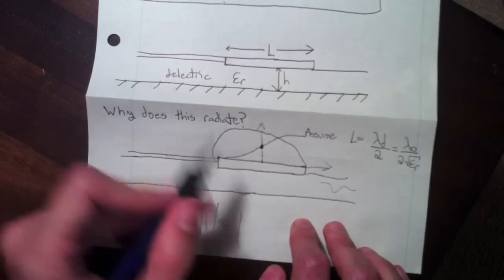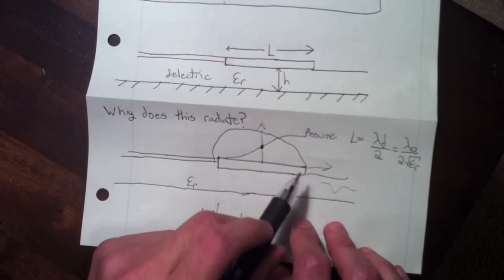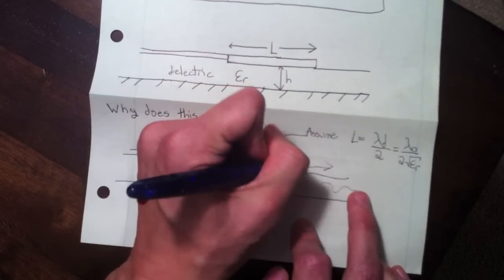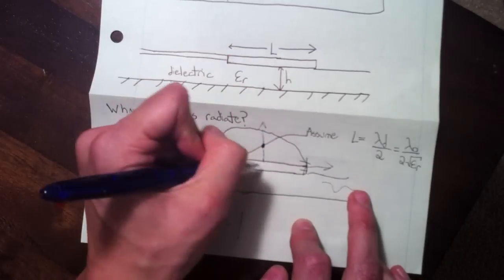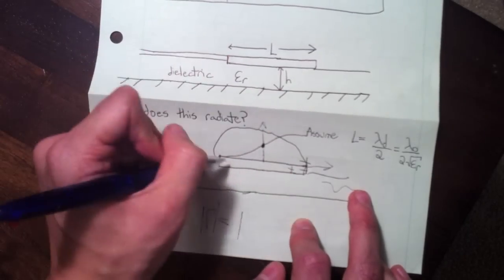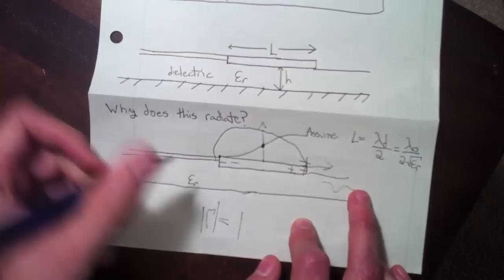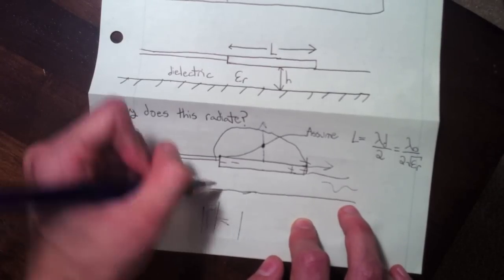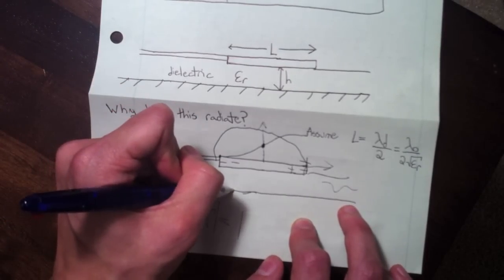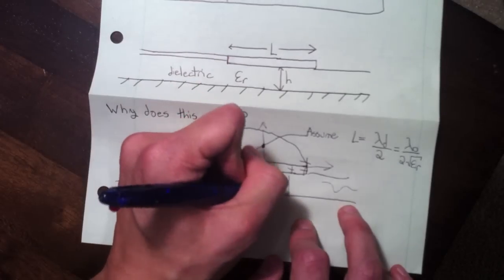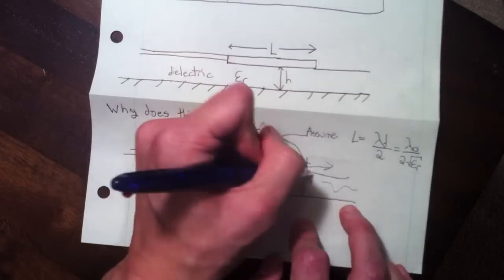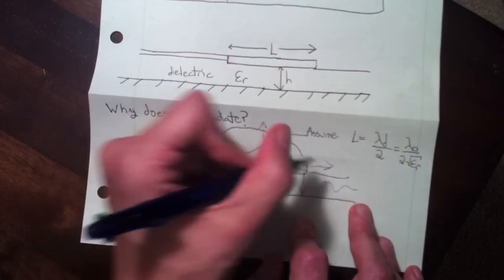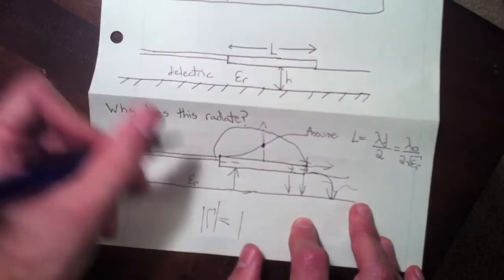If we look at here, we know the voltage is at a peak, so I'll put plus here, it's nothing here, and then negative out here. If we look at the fields, they're underneath the patch, they'll go this way, they get stronger towards the end. And then we get these fringing fields out here that go like this.